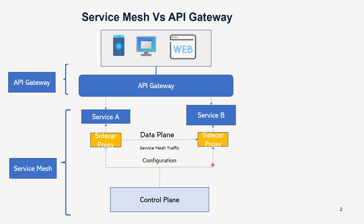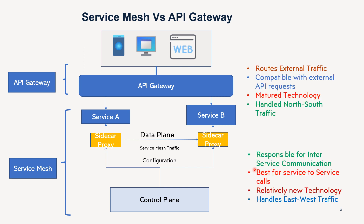So what is happening here? Whatever external traffic is coming to our application is being handled by the API Gateway. But when the API Gateway sends the request to the services, and when they want some information from other services, they are using a Service Mesh pattern. So in this scenario, we are seeing that API Gateway and Service Mesh are working seamlessly.